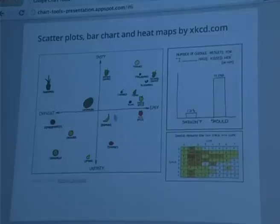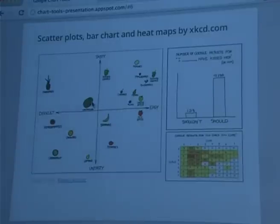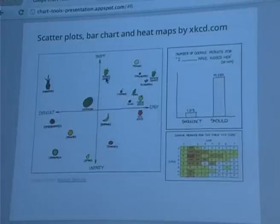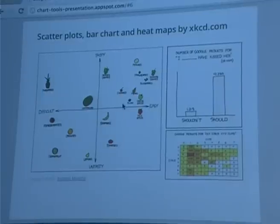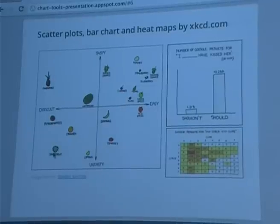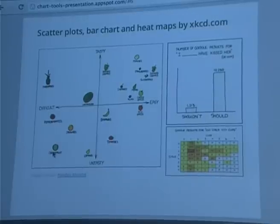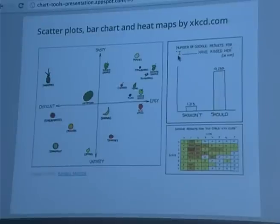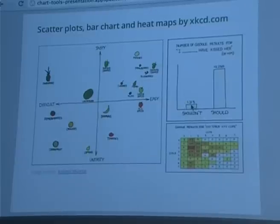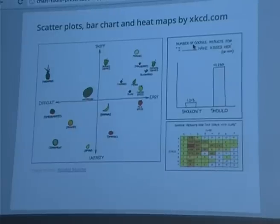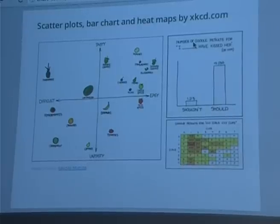One of my favorites is this scatter plot. It has two axes: how easy it is to eat a certain fruit, and how tasty that fruit is. We have seedless grapes that are easy and good, and grapes with seeds that are not so easy. Does anyone know how this chart was titled? It was titled 'Fuck Grapefruit' — because grapefruit is all the way down, since no one likes to eat it and it's difficult. And here's another great example from XKCD: number of Google results for 'I X have kissed her.' Only 1,200 people searched for 'I shouldn't have kissed her,' but 10,000 people searched for 'I should have kissed her' — meaning you should always kiss rather than not kiss.